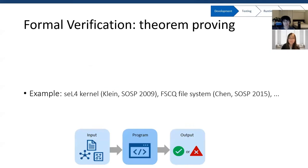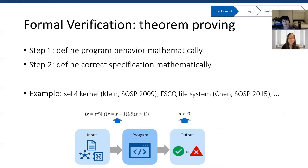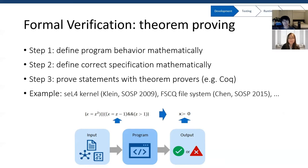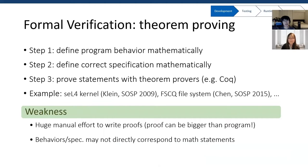Another way to do formal verification is to prove the program like proving a theorem. Several systems are proved this way, for example, the seL4 kernel and the FSCQ file system. First, we define the program's behavior mathematically. Next, we define the correctness specification mathematically. Finally, we send both to a theorem prover — for example, Coq — to determine whether the correctness specification holds true. Disadvantages include that describing the system mathematically can take huge manual effort, often producing proofs several times the size of the program. Also, there may not be an easy correspondence between program behaviors and mathematical statements, requiring significant developer intelligence to bridge the gap.